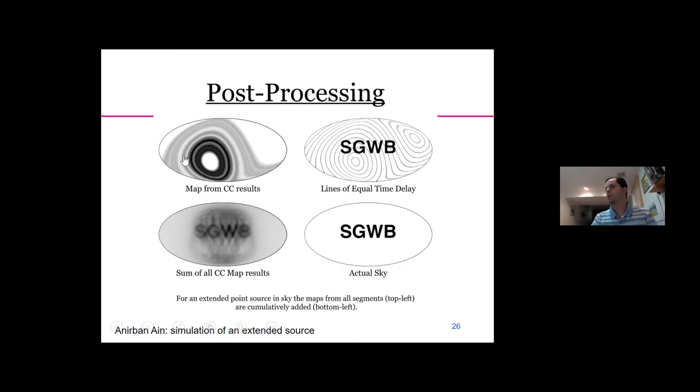A second simulation used an extended stochastic gravitational-wave background instead of a point source. Initially nothing is visible, but as the Earth completes a full rotation the pattern gradually emerges. These simulations nicely illustrate how the Earth's rotation causes the sensitivity circles to sweep the sky and how this accumulation allows the sky map to emerge over time.